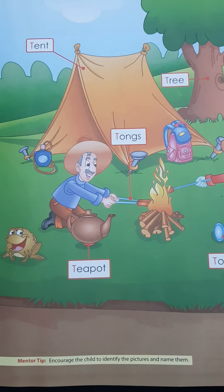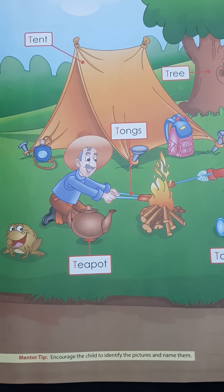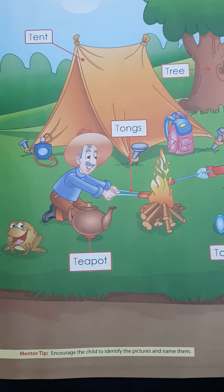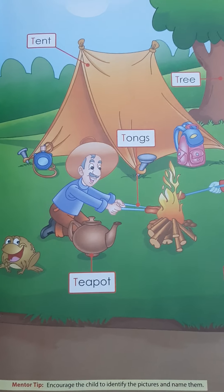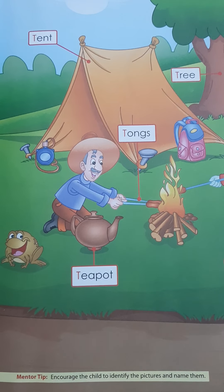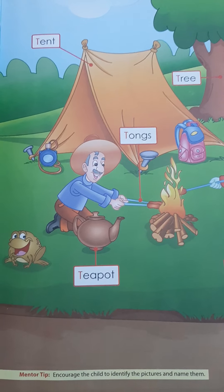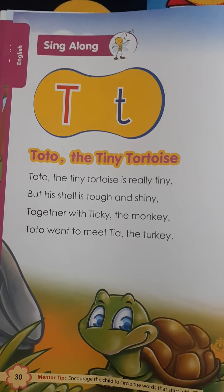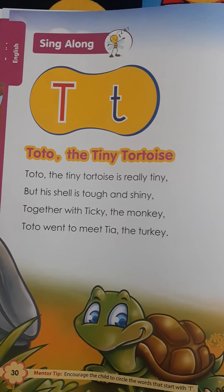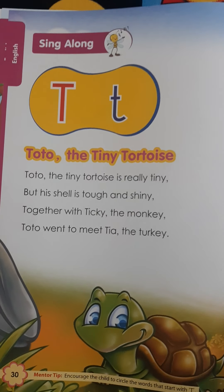T-T torch. And what is the other picture? T-T tortoise. T-T tomato. T-T tiger.